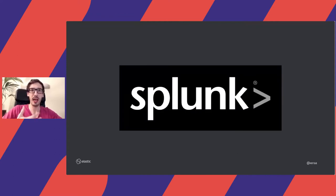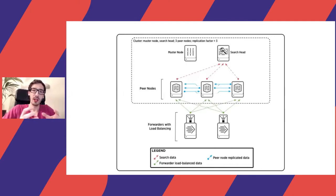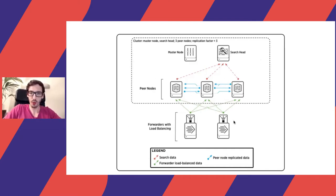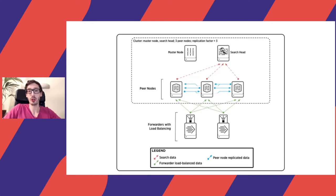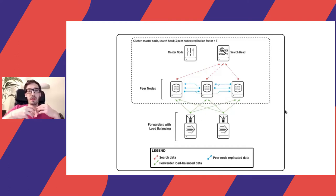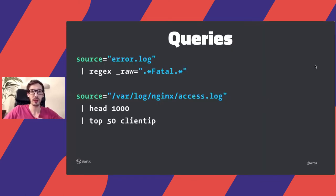Along came Splunk, being relatively early in the log game. Splunk provided centralization — if you have an application that needs horizontal scaling or is more distributed, you could have log forwarders that forward your logs to so-called peer nodes that store the data and potentially replicate between them, so if one dies you still have the logs. Then you have a search head that allows you to search through all those forwarded logs. This was both more scalable and easier to work with in a distributed or horizontally scaled fashion.